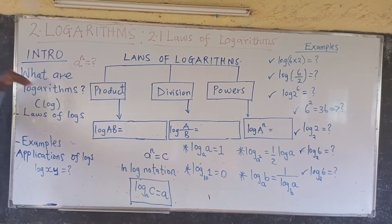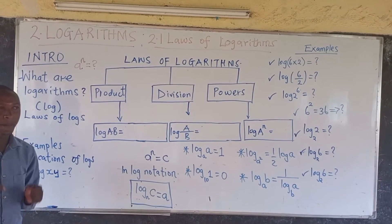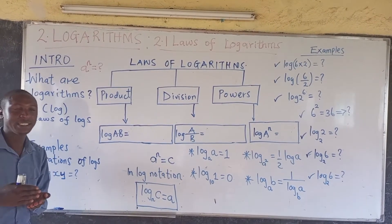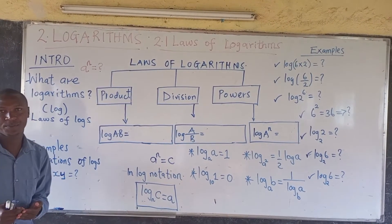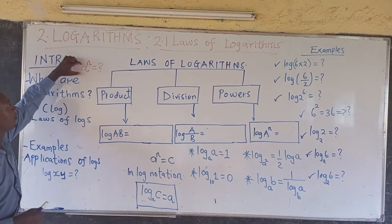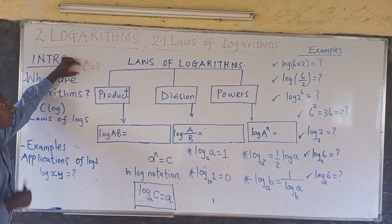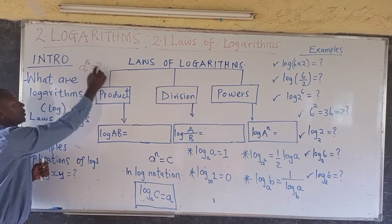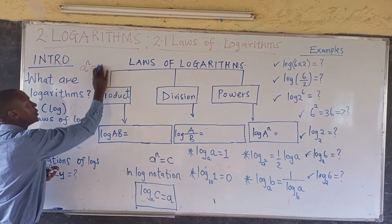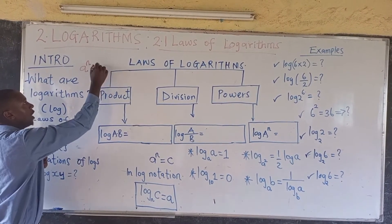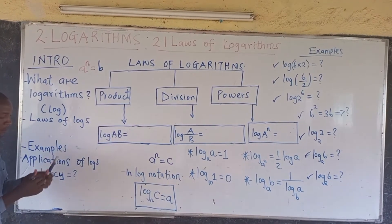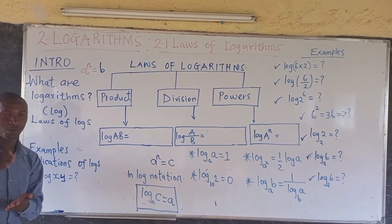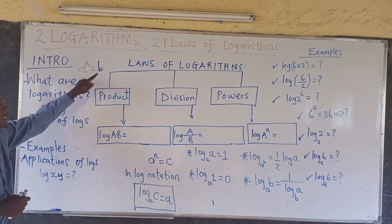So what are logarithms? Logarithms are powers to which we must raise a number in order to get a given result. For instance, if you have a number A, its logarithm is defined as this power — if you raise A to this power you must get a result. Therefore, we conclude that logarithms are powers to which you must raise a number to get a given result.